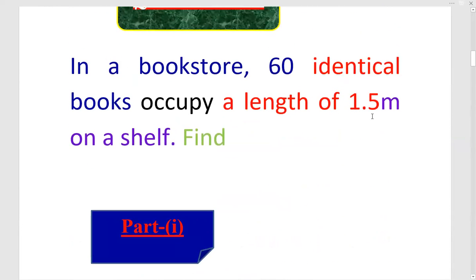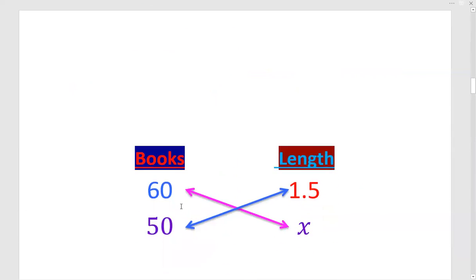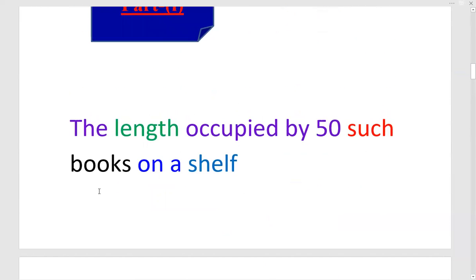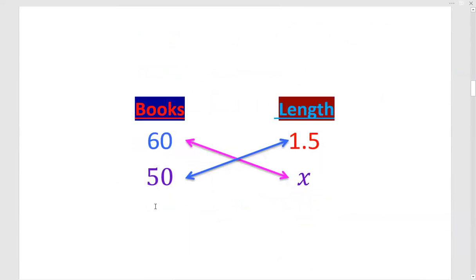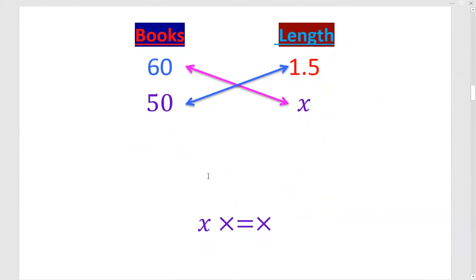In this case, there are 60 identical books and their length is 1.5 meter. See, 60 books and length - make two columns. 60 books and 1.5 is the length. Now in part 1, 50 such books - the number of books has decreased to 50, and you need to find the length that is x. Definitely the length will also be less. So in this situation there is direct relation and I have drawn the cross here also. Now 60 into - you write x into 60, and write the value here. And after that 50 into 1.5. This is 50 and into 1.5.